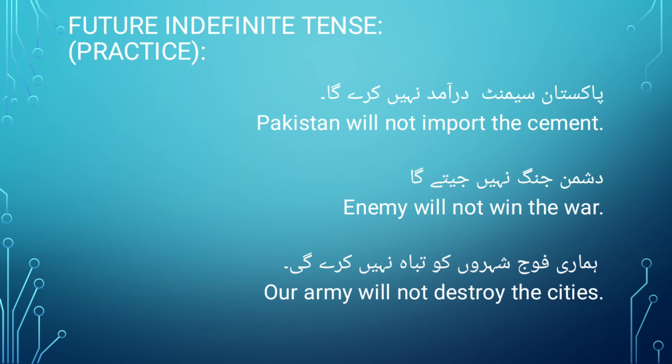Yahan par kuch sentences diye gaye hain aur yeh tamam sentences negative form mein hain, because hamari yeh puri exercise negative sentence ki practice ke liye hai. First one: Pakistan cement daramat nahin karega. Pakistan will not import the cement. Import is first form and will not is the helping verb with addition of not. Next: Dushman jang nahin jeetega. Enemy will not win the war. Win is first form, will is helping verb plus addition of not.